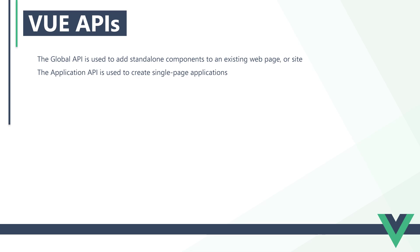This series will start with the application API, then cover the global API once you're more familiar with Vue. Both the global and application APIs use two other APIs — we can think of them as the main ones, in other words, the way we use Vue.